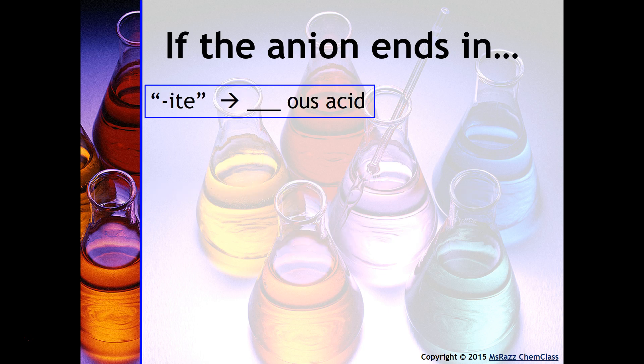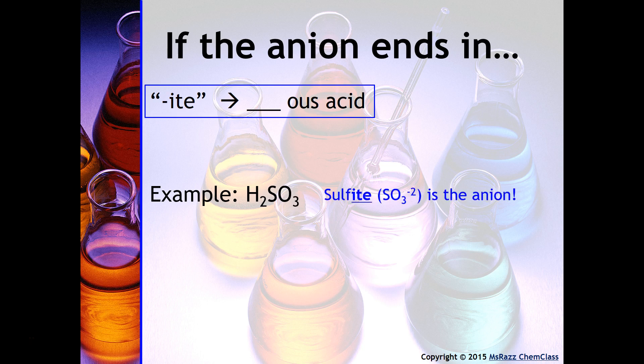Finally, if the anion ends in -ite, you would call it '___ous acid.' For example, SO₃²⁻ is called sulfite — since the ending is -ite, you would call the acid sulfurous acid.